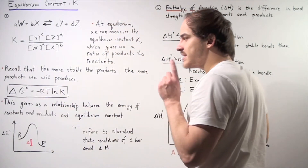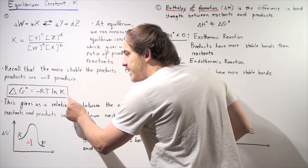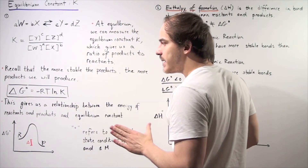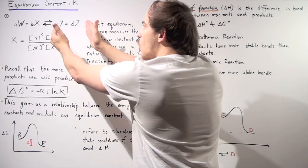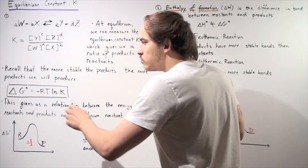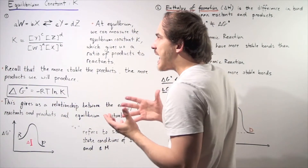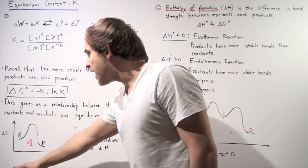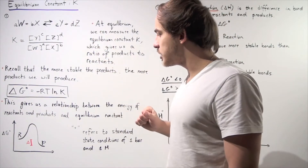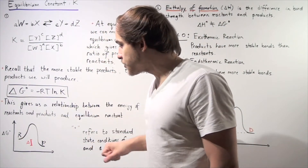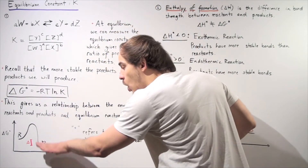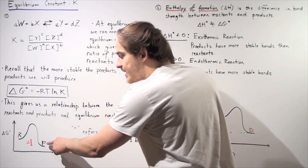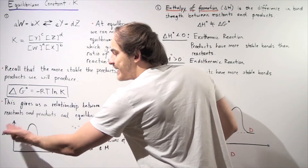What this equation tells us is: when K is greater than 1, the natural log is positive, so negative R times T times ln(K) is negative, meaning ΔG° is negative. That means our products are more stable — lower in energy — than our reactants. This is simply the change in energy between our final products and our starting materials. For example, if we draw an energy diagram for a reaction where the products are lower in energy than the reactants, the change is negative — a smaller number minus a larger number gives a negative value — so K will be greater than 1.